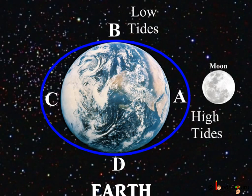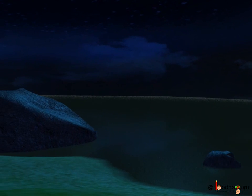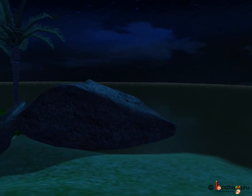There are two kinds of tides: the high tide and the low tide. During the high tide the water level rises and during the low tide the water level comes down. This is how the high tide and the low tide looks.